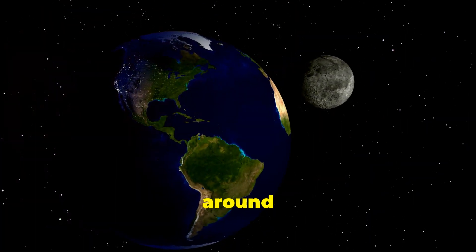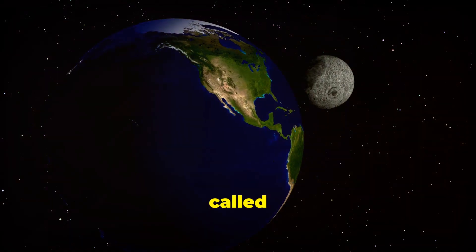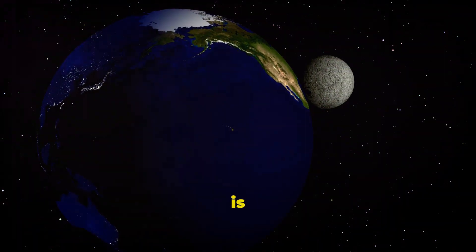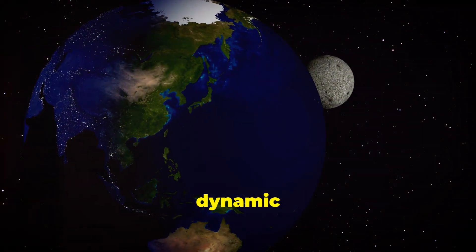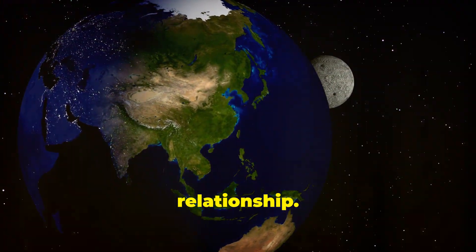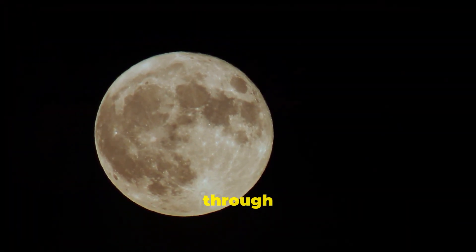Its orbit around Earth isn't a perfect circle, but a slightly elongated oval called an ellipse. This unique path means the moon is sometimes closer to us and sometimes farther away, creating a dynamic and ever-changing relationship. This means the moon's distance from Earth constantly changes as it goes through its monthly cycle.